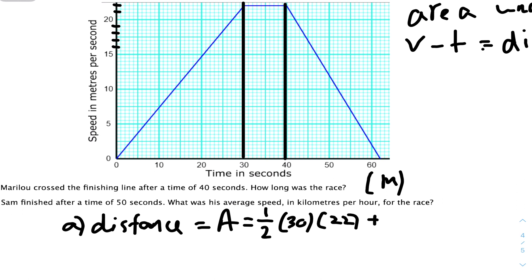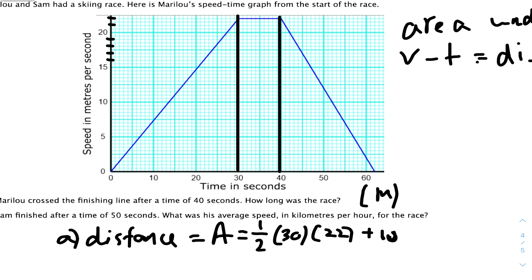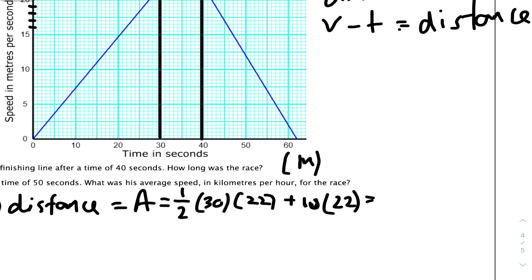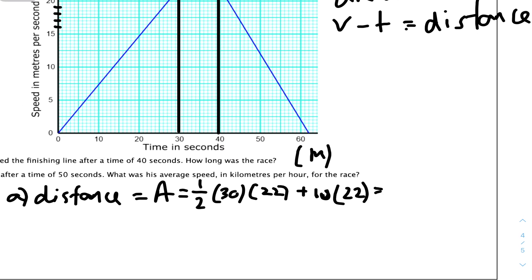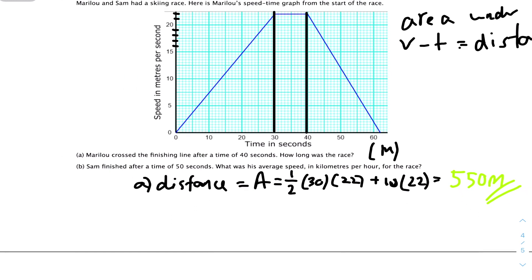So the height is 22. The area will be half times 30 times 22 for the triangle. For the rectangle, it will be 10 times 22. Let me add them all up: half times 30 times 22 plus 10 times 22 equals 550 meters. Remember the units: 550 meters. And that's the distance.